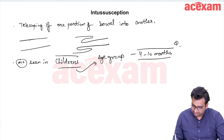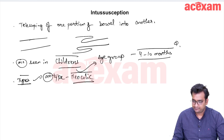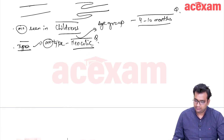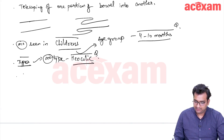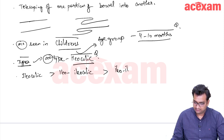The types of intussusception: the most common type is ileocolic. Overall, there are multiple types — it can be ileocolic, ileo-ileocolic, ileo-ileal, and the least common is colocolic.